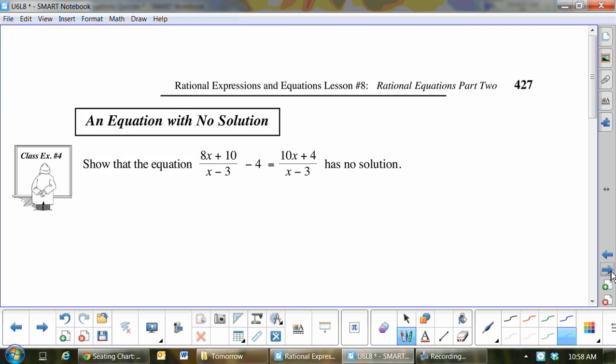What would you do in this question to solve it? Common denominator of x minus 3. So I multiply this by x minus 3, this I'm going to multiply by x minus 3, and this I'm going to multiply by x minus 3. This one you can cross out, so I got 8x plus 10. This one is going to be negative 4 bracket x minus 3, equals, and that crosses out, 10x plus 4.